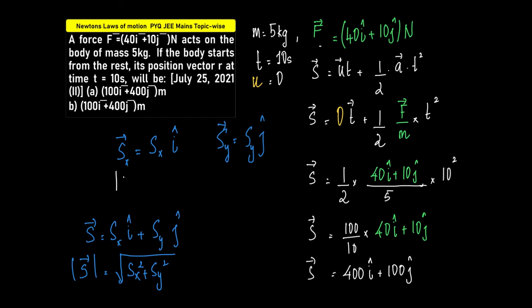In fact, if you write this even further, what is magnitude of S in the x direction? It is Sx. And what is magnitude of S in the y direction? It is Sy. And what is vector S? The magnitude of vector S is equal to root of Sx square plus Sy square.